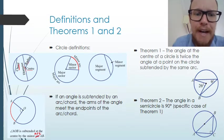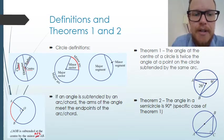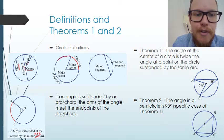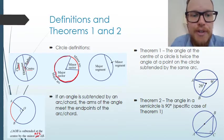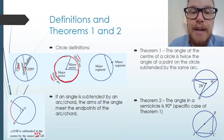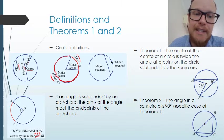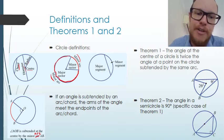We also have arcs and sectors. An arc is any line that traces around part of the circle. A major arc goes over half of the circle, a minor arc goes less than half the circle, and if it goes exactly halfway around the circle then it's a semi-circle arc.